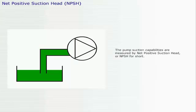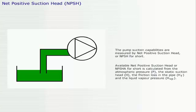The pump section capabilities are measured by net positive suction head, or NPSH for short. Available positive suction head, or NPSHA for short, is calculated from the atmospheric pressure, the static suction head, the friction loss in the pipe, and the liquid vapor pressure.